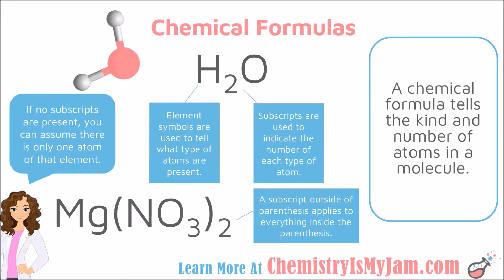The fixed ratio of atoms in molecules and other compounds can be represented by a chemical formula. A chemical formula tells you the kind and the number of atoms present. For example, water has one oxygen and two hydrogen atoms. The chemical formula for water is H₂O — the capital H indicates hydrogen, the subscript 2 means there are two hydrogen atoms, and the capital O indicates oxygen. If there are no subscripts present, you can assume there is only one of that type of element.